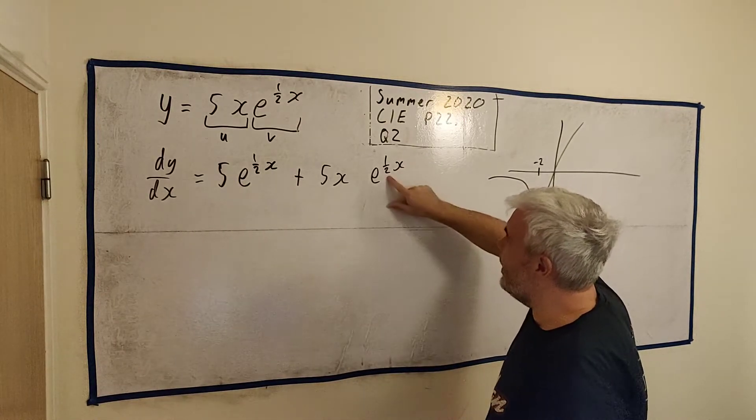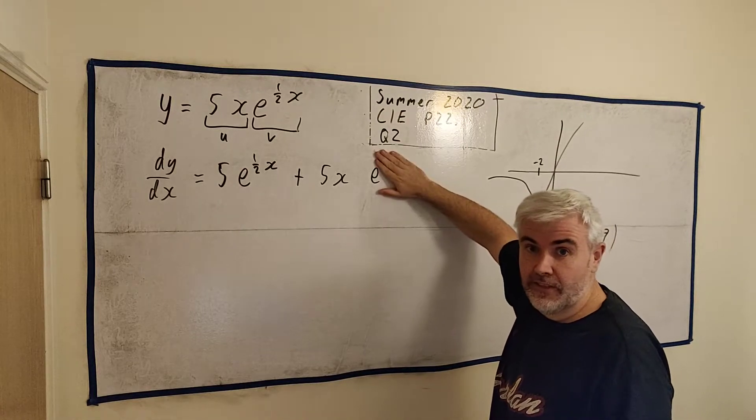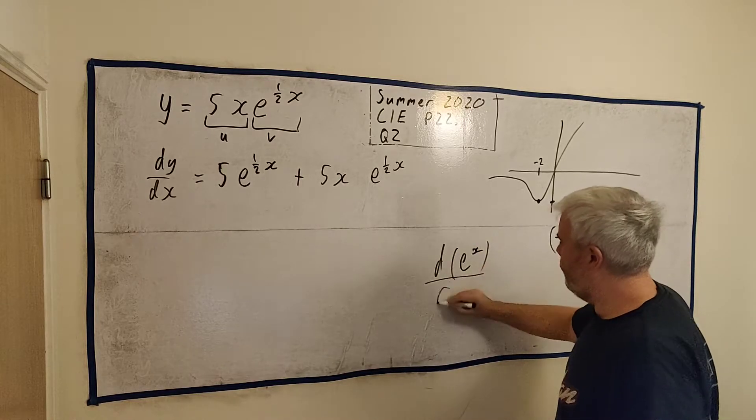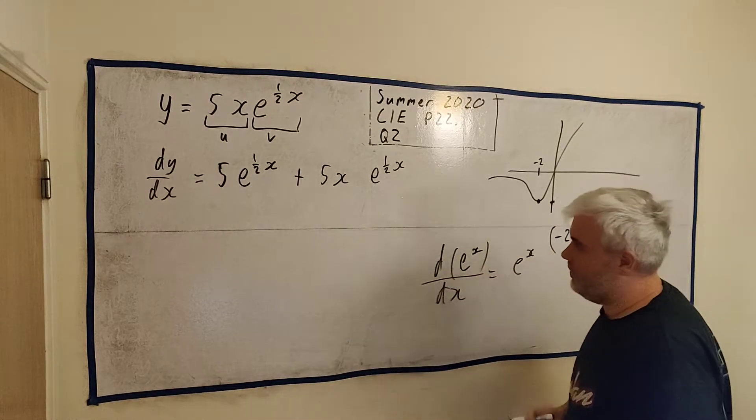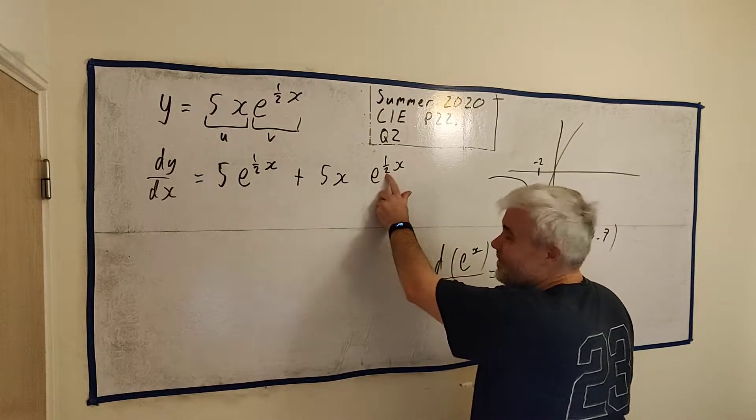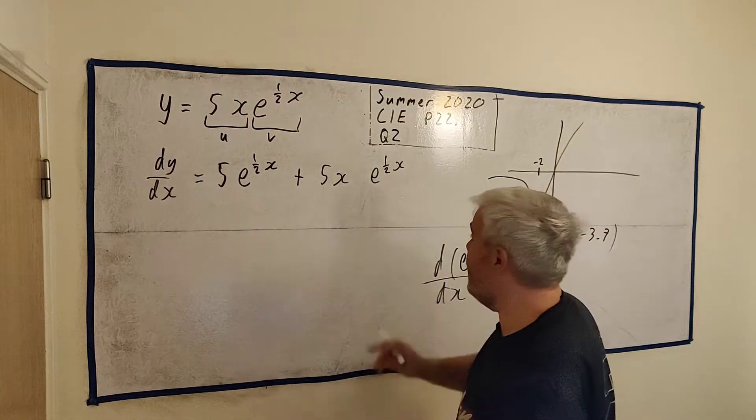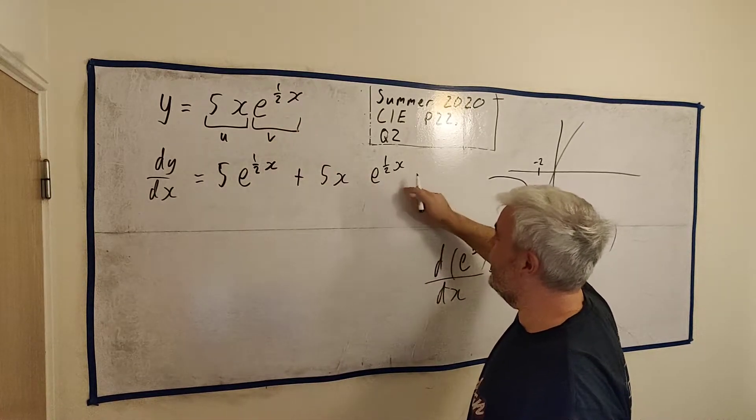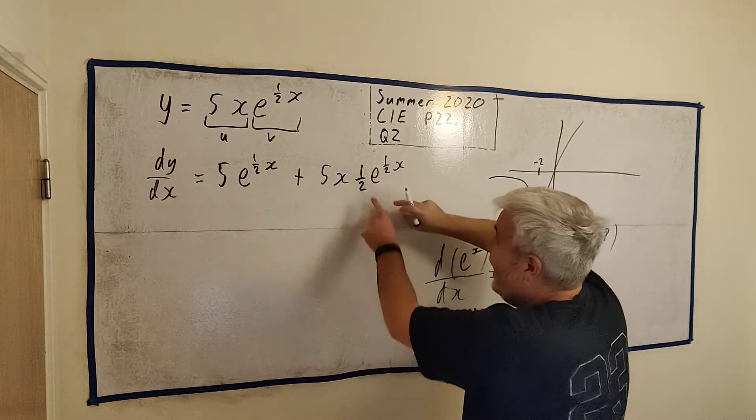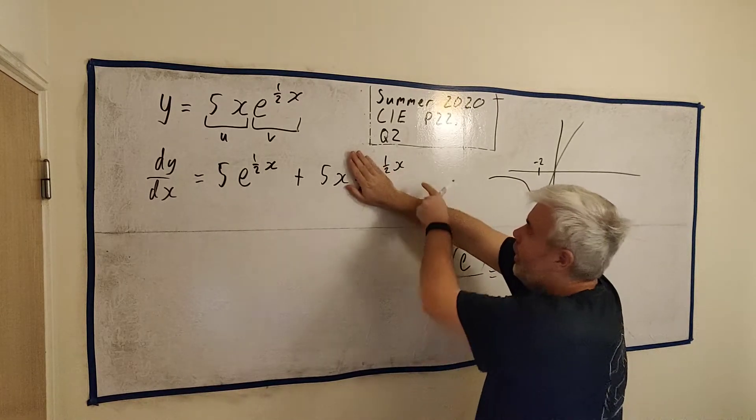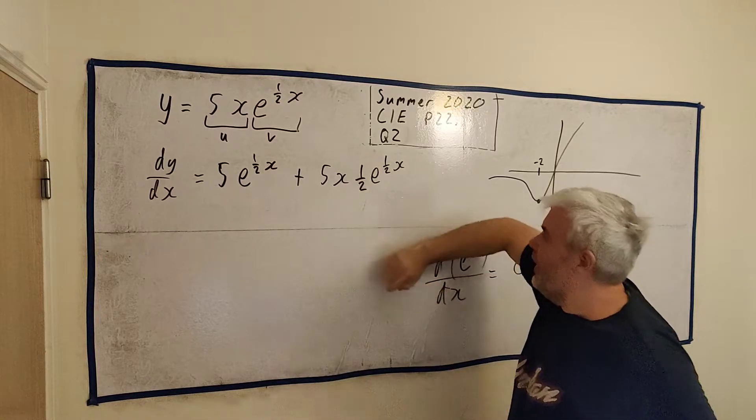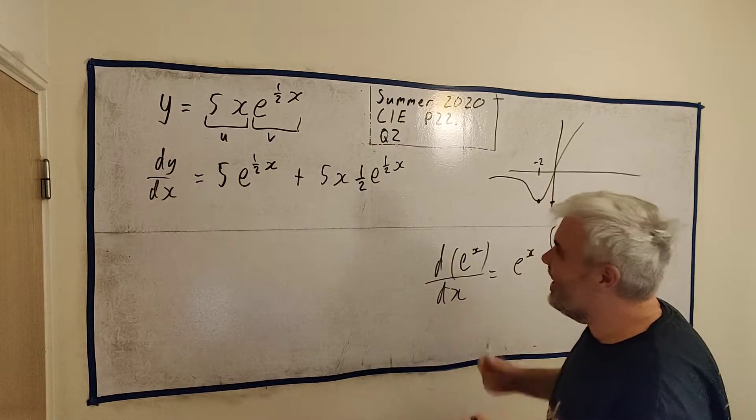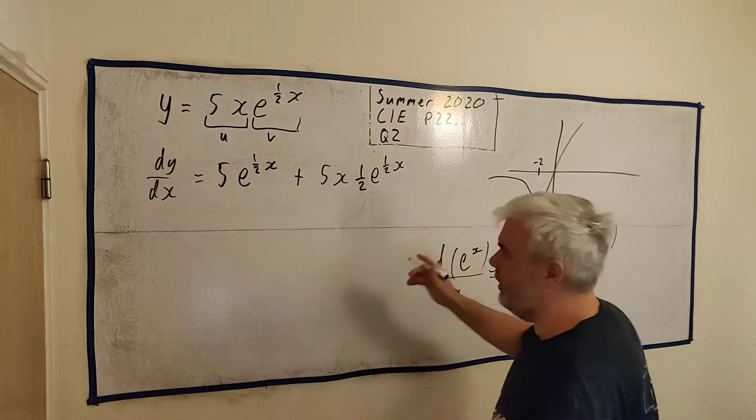People put u and v. But then it's easy enough to remember the product rule. One of them left alone, the other differentiate. And then add and do the other way around. Now exponentials are quite easy to differentiate. We just leave them alone. At least when it's just x up here. But it's not quite e to the power of x. There's a half here. So we use the chain rule. So e to the power of a half x differentiated is this multiplied by a half.